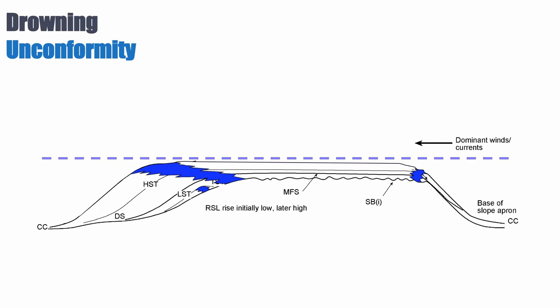Because the production rate of carbonate far exceeds the increase in accommodation, which means that the system aggrades and progrades. But now this could go on for many cycles. You could keep piling up carbonates on top of this system for a very long time, and in fact in the Bahamas it's been going on for millions of years.